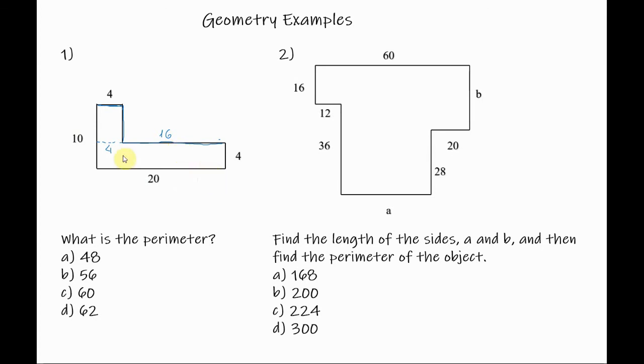We can use the same logic to find this side length. So if this side length is equal to 4, that means that this piece here is equal to 4, which means that this side length is equal to 10 minus 4 which is equal to 6.